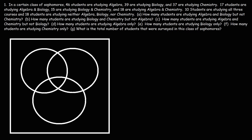Part A: how many students are studying algebra and biology but not chemistry? We'll use A for algebra, B for biology, and C for chemistry. The first thing I like to do is fill in the middle part of the Venn diagram, which represents the students taking all three courses. We have 10 students studying all three courses, so we put a 10 in the center.